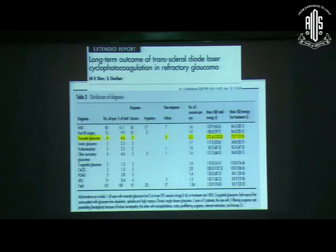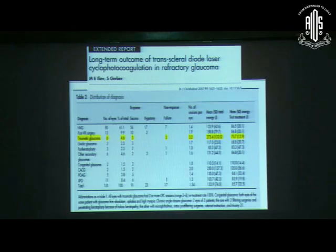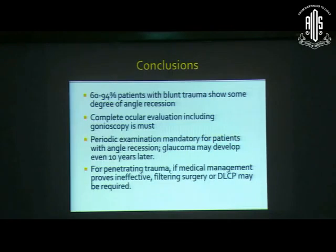In eyes with penetrating trauma, the anatomy may be seriously disrupted and no surgery may achieve optimum IOP control, and vision prognosis may not be good. In such eyes, cyclophotocoagulation may be considered. One study of six traumatic glaucoma cases found that 50% achieved good IOP control after DLCP. Each patient must be treated individually, weighing which option suits best to achieve the best response.